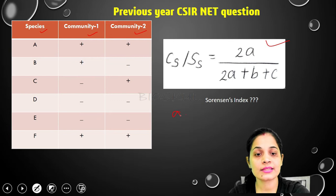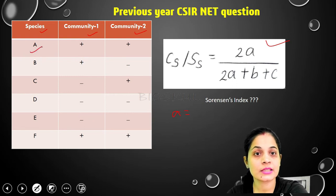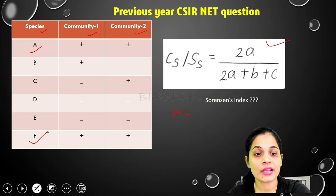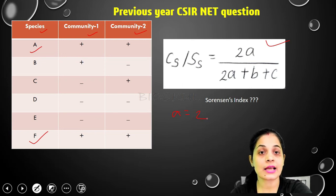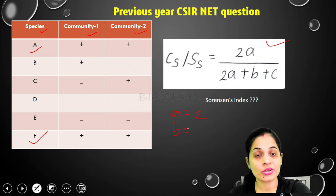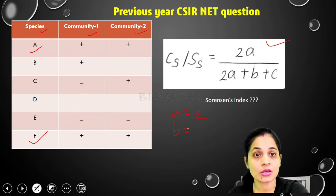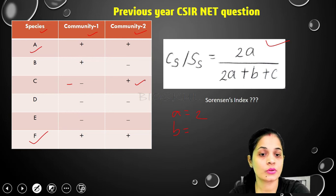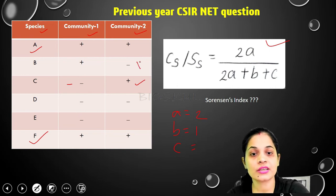'a' is the species present in both communities. Species A and species F are both present in community 1 and community 2, so the value of a is 2. For 'b' — absent in community 1 but present in community 2 — species C is absent in community 1 but present in community 2, so b equals 1.